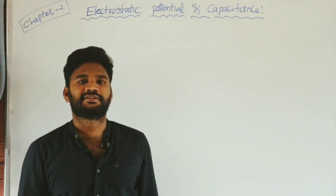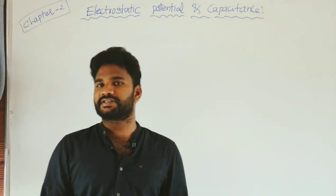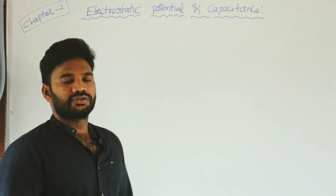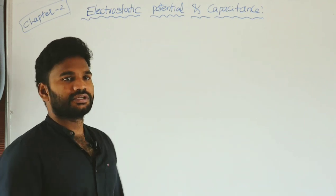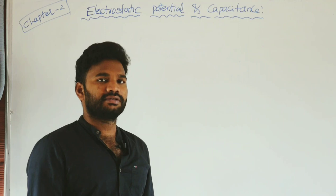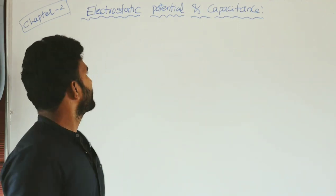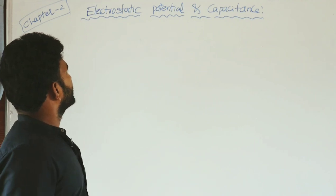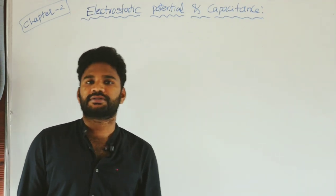Hello students, welcome to Oxalis online physics classes. In today's video, I am going to discuss the second chapter of the NCERT CBSE physics textbook part 1. The title of this chapter is Electrostatic Potential and Capacitance.